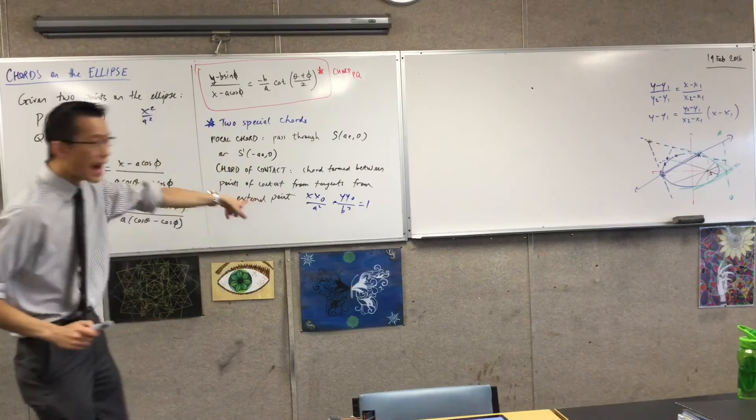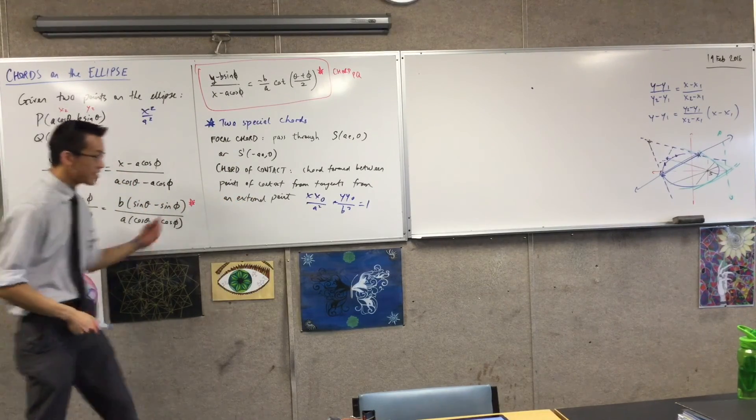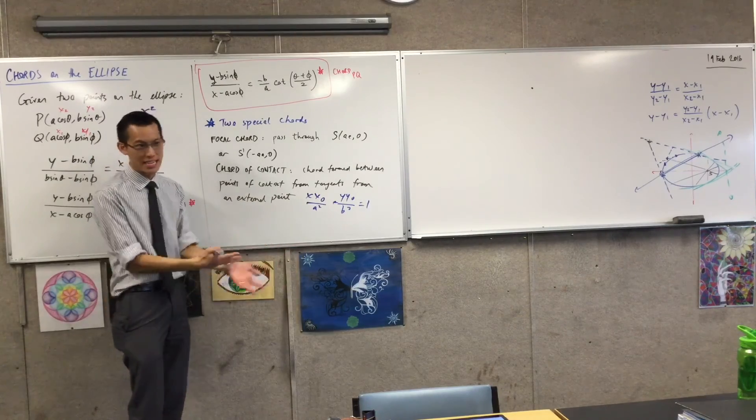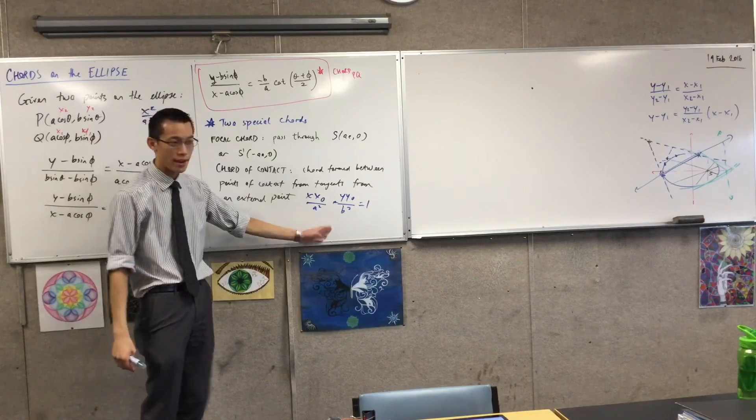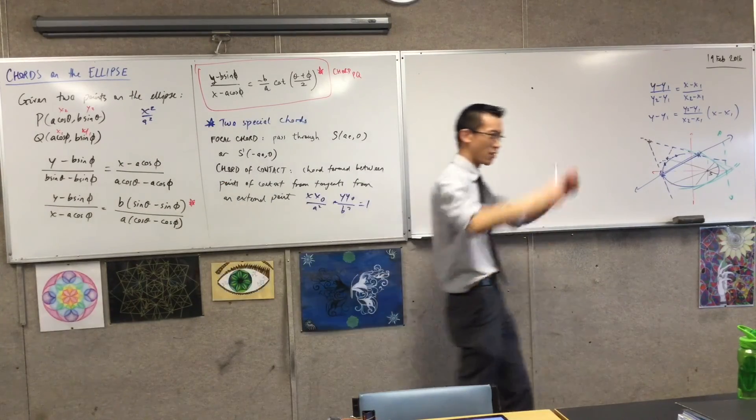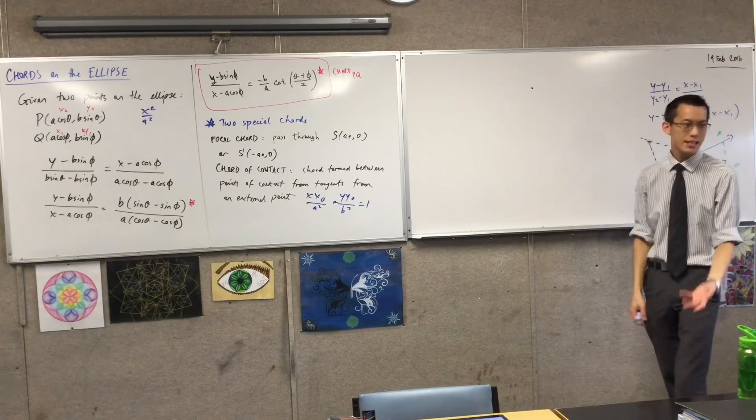So that, being the same as the equation of the tangent to an ellipse, ends up being exactly the same. And there's no need to go through all of these, because again, you can't quote this, you have to go through those steps anyway, so it's not like we can prove this result and then, hooray, we can quote it from now on. You have to do this from scratch every time, and it is easier with numbers anyway.